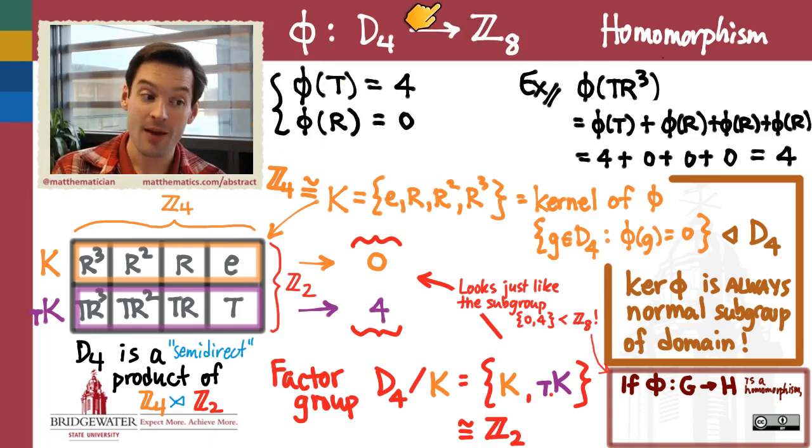That's one more really exciting thing that we got out of this process of defining a homomorphism out of D₄ and into ℤ₈. The homomorphism out of D₄ has identified a normal subgroup inside of D₄ that I can play with and on which we can build the whole group D₄. But over in ℤ₈, the image of this homomorphism is a subgroup of ℤ₈ in turn, and that image subgroup is isomorphic to the factor group of my original group by the kernel of this homomorphism.